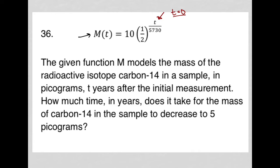So the question here says the given function M models the mass of the radioactive isotope carbon-14 in a sample in picograms, t years after the initial measurement. How much time in years does it take for the mass of carbon-14 in the sample to decrease to five picograms?